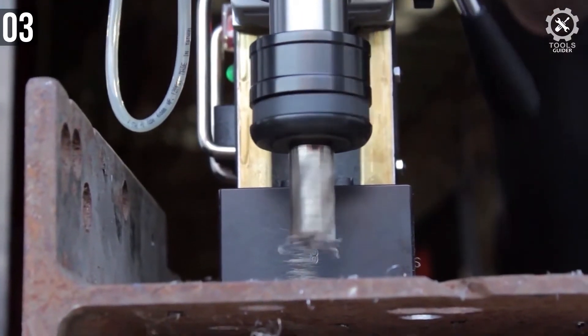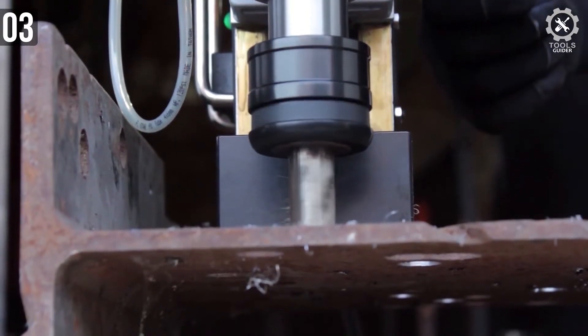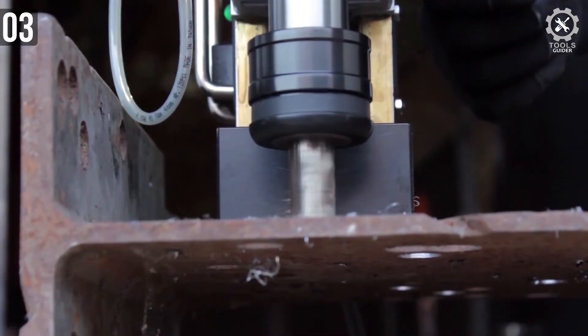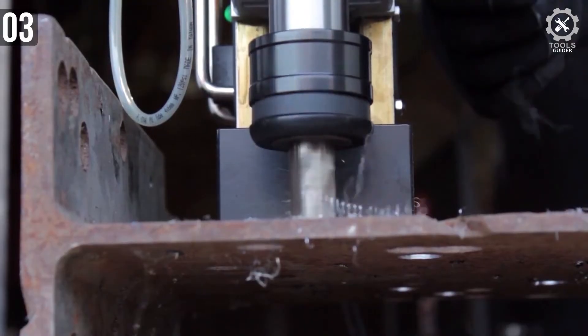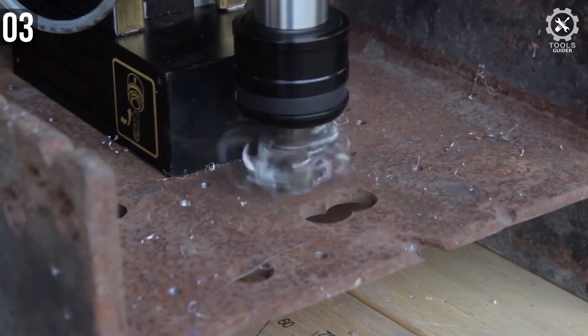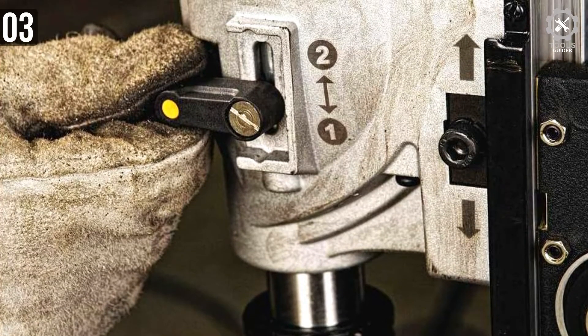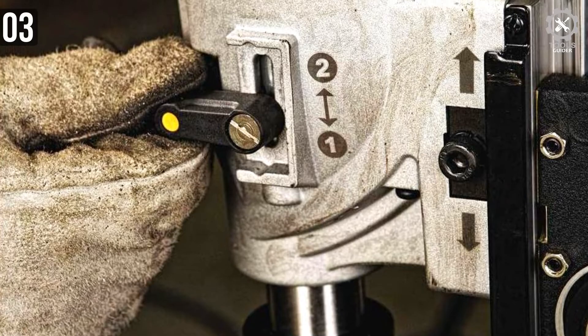The power of every drill press is determined by its engine, and in case of this unit, its motor delivers the total power of 10 amps. This is guaranteed to provide the user with enough power for effortless cutting through all sorts of tough materials, including steel. Just like we expected, the speed is adjustable, allowing you to choose from two different speed settings: 350 and 450 RPM.